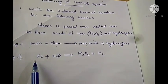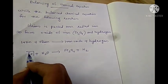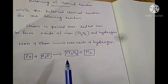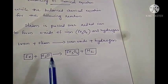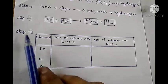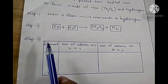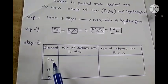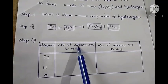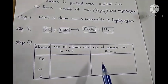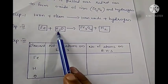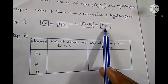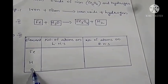After writing this skeletal equation, we have to put the reactants and products in boxes. We are not supposed to make any changes inside these boxes; we can only add numbers outside the boxes to balance the equation. In Step 3, we have to list the number of atoms of different elements present in the skeletal equation. For that we make a table with three columns: element, number of atoms on the left hand side, and on the right hand side. The three elements present are iron, hydrogen, and oxygen.